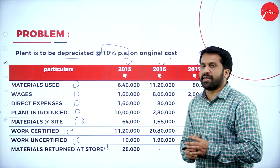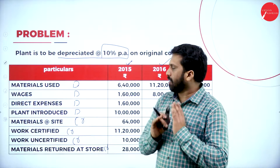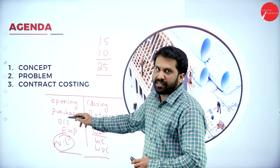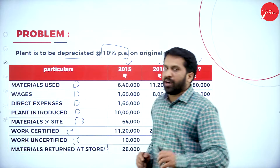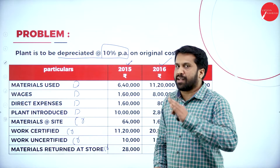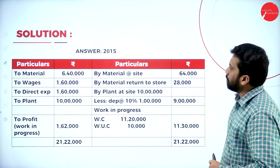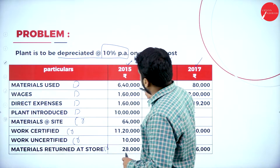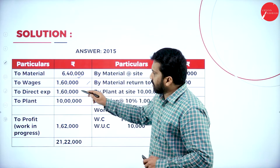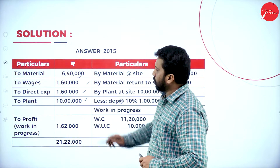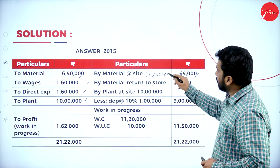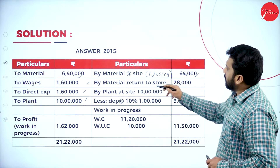Now we have to bifurcate which comes under debit and which comes under credit. Material 6,40,000 — debit. Wages 1,60,000 — debit. Direct expenses 1,60,000 — debit. Plant introduced — debit. Material at site — credit, as it is the closing balance. Material returned — credit. Plant at site: once you have written plant on the debit side, you should write its closing balance on the opposite side.